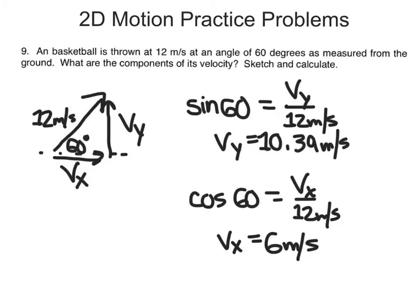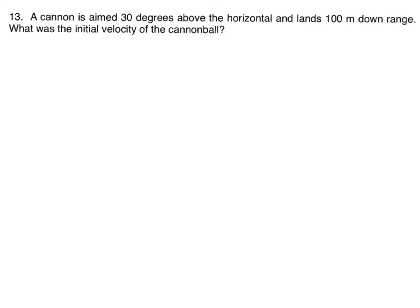Let's take a look at 13. A cannon is aimed 30 degrees above the horizontal and lands 100 meters downrange, and they're looking for that initial velocity of the cannonball. So we'll just sketch the downrange here. Here's our cannon. It's at a 30 degree angle, and that projectile is going to land 100 meters downrange. So that's what I can label on that diagram.